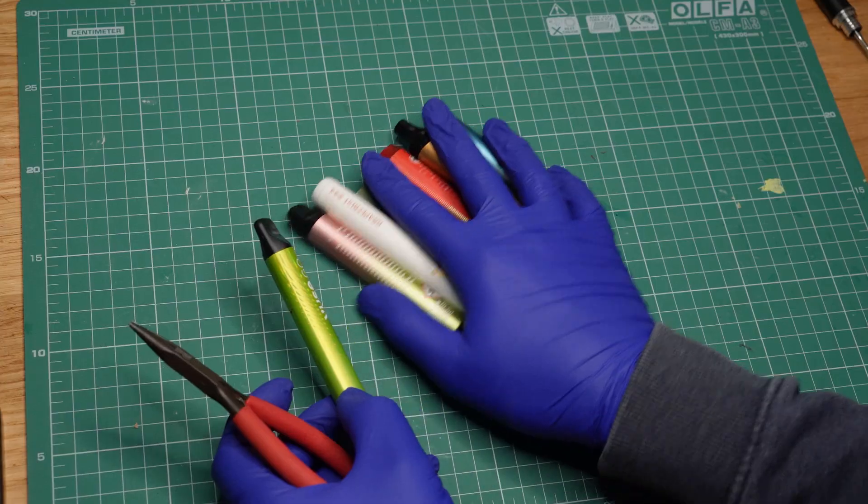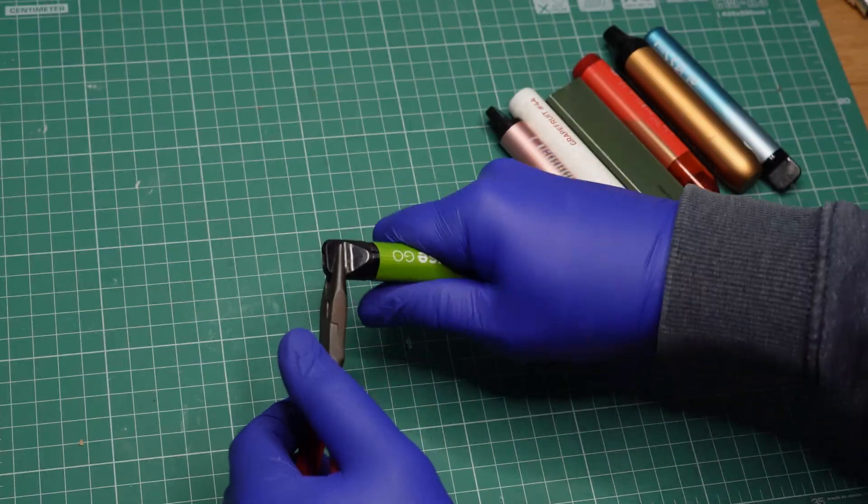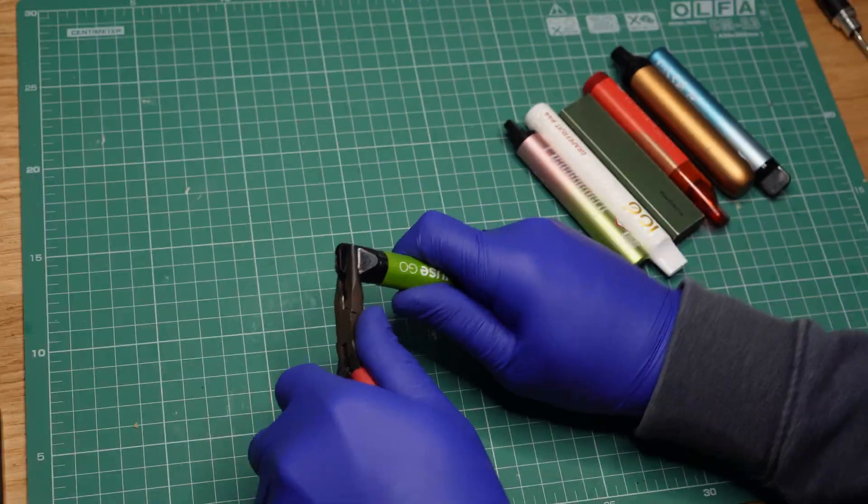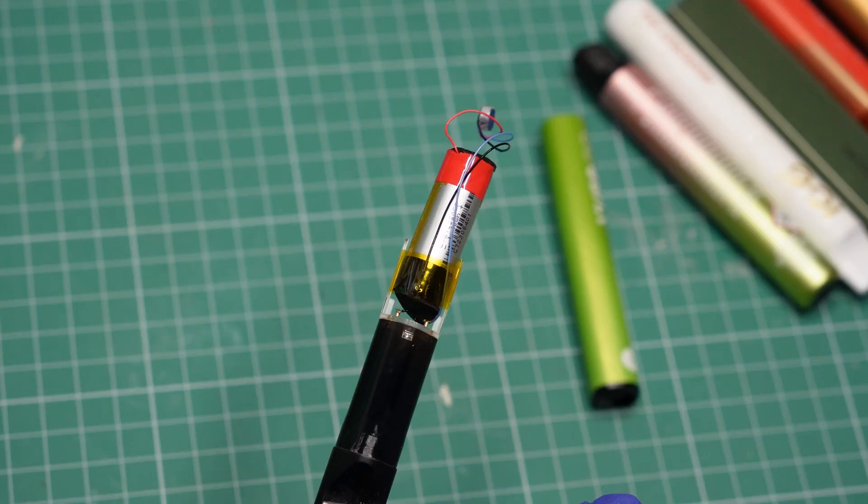With that disclaimer out of the way, all of these come apart the same way, more or less. If I wiggle the mouthpiece with my pliers, all of the spicy guts come out. And this here is the battery I'm interested in.